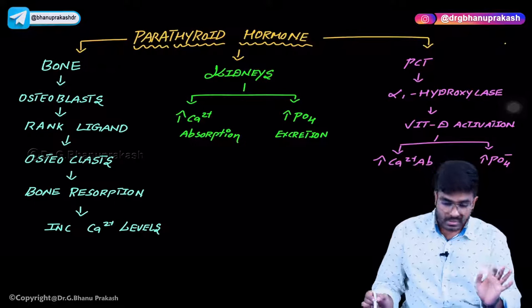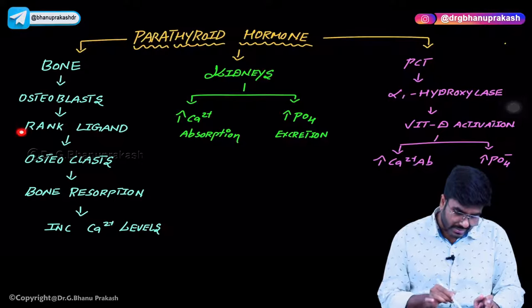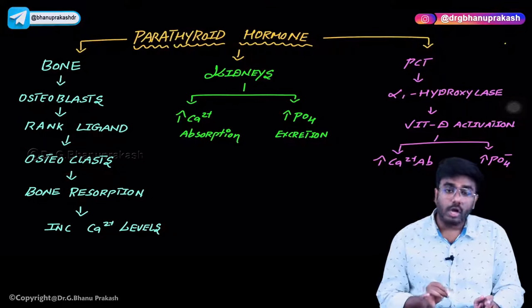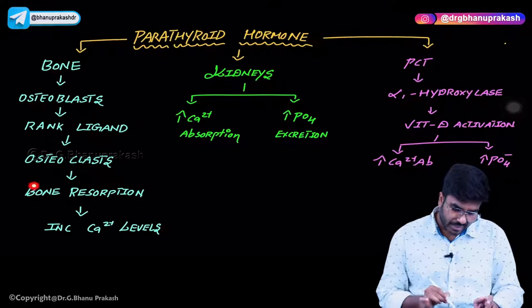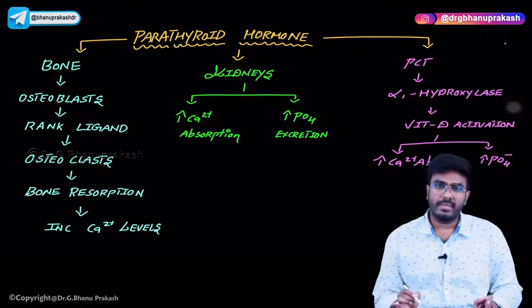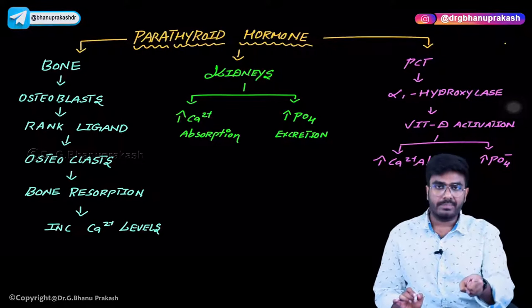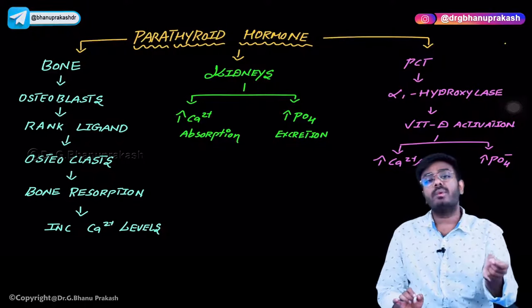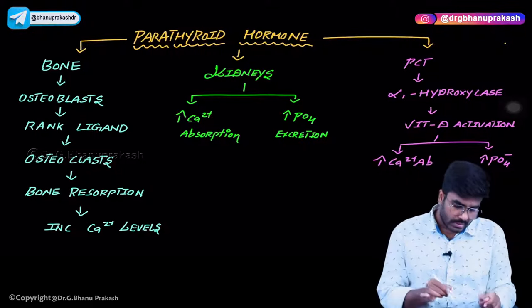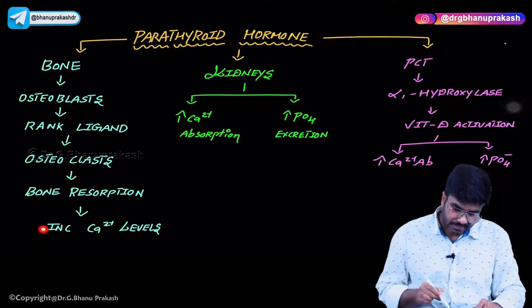When PTH acts on bone in pulsatile doses, it stimulates osteoblasts. When osteoblasts are stimulated, they produce something called RANK ligand. This RANK ligand acts on osteoclasts, activating them, which causes bone resorption. Whenever bone is resorbed, that causes increased calcium levels. Osteoclastic activity is under the control of osteoblasts.